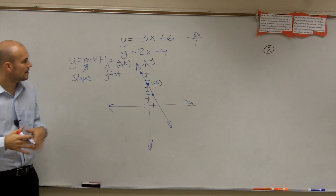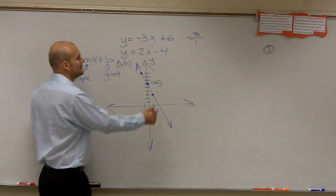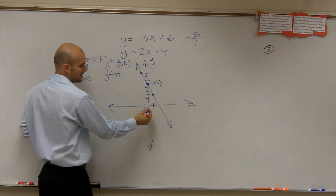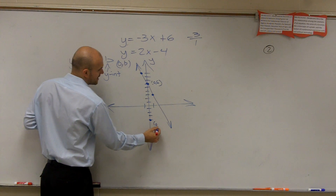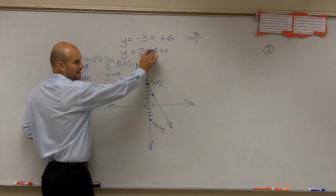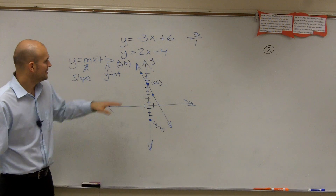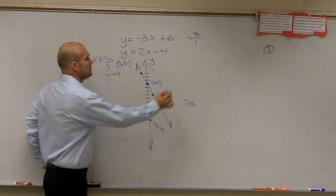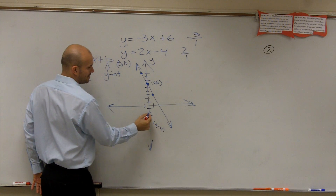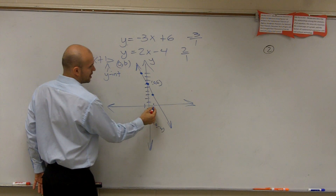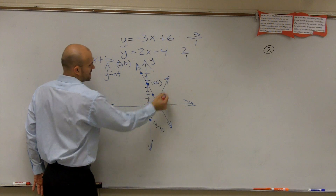Now we need to graph the next one. First we find the y-intercept, which is negative 4 — we go down 1, 2, 3, 4 and plot the point (0, negative 4). My slope is 2, which I write as 2 over 1. So that means I go up 2 to the right 1, up 2 to the right 1. Then I connect my points.